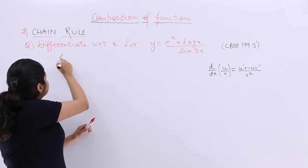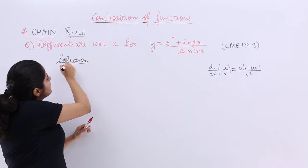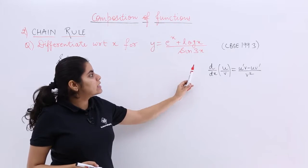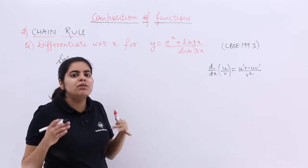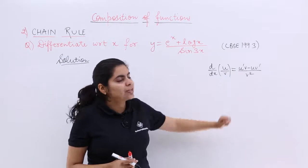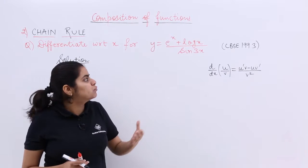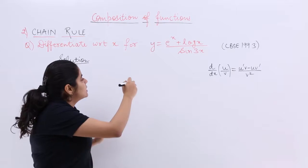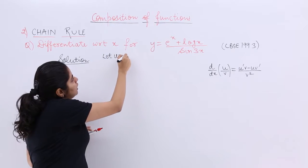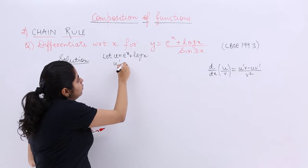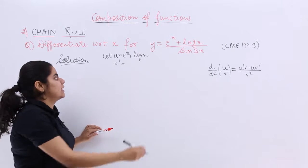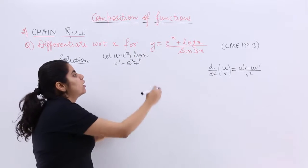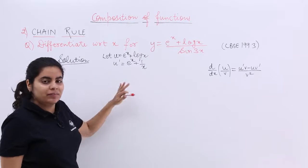Now let's see the solution. Let u equal e raised to the power x plus log x. Then u', the differentiation with respect to x, is the differentiation of the first term — e^x, which remains the same — plus the differentiation of log x, which is 1 by x. So u' = e^x + 1/x.